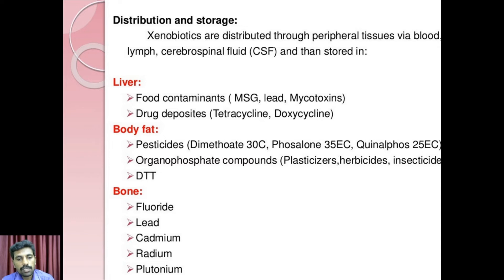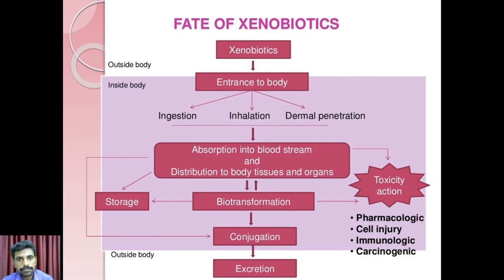Then, coming to bone — fluoride, lead, cadmium, radium, and plutonium — these heavy metals are ultimately stored in the bone. So, xenobiotics are stored in body constituents including the liver, body fats, and bone.